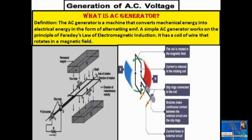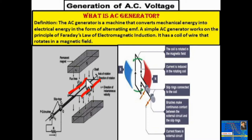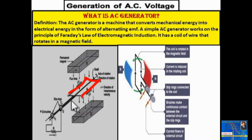There is a rectangular coil — you can see this is side AB and this is side CD. This rectangular coil is placed between the uniform magnetic field, and it is connected through slip rings and brushes.